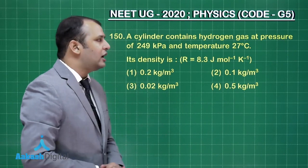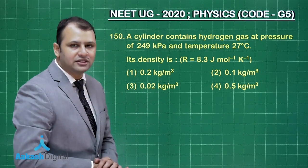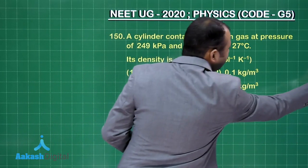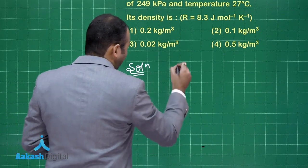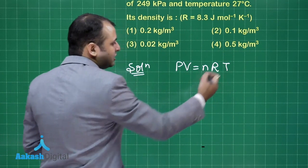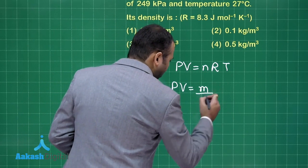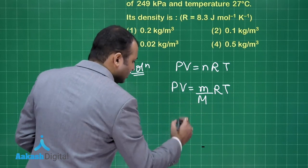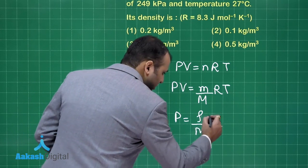As per the question, a cylinder contains hydrogen gas at a pressure of 249 kilopascal and temperature of 27 degrees centigrade. We have to find its density, and the gas constant is given. Using the formula PV equals nRT, where n equals given mass upon molecular mass, we can write PV equals mass over molecular mass into R into T. Rearranging, pressure equals density divided by molecular mass, into R into T.